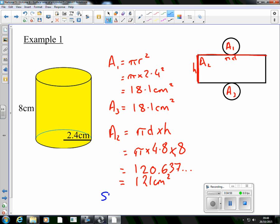And then the total area to finish off, so the surface area of that cylinder is going to be 18.1, add 18.1, add 121. Which is going to be 157 centimeters squared.